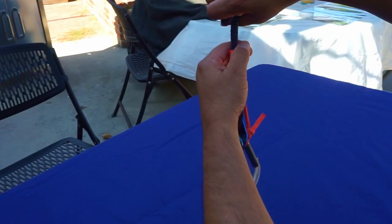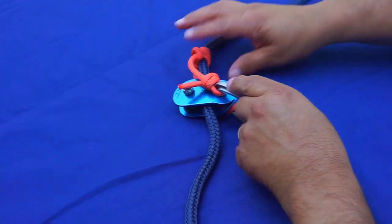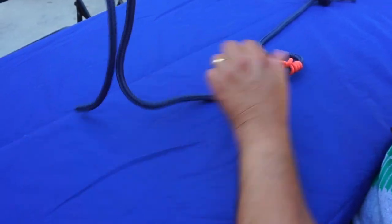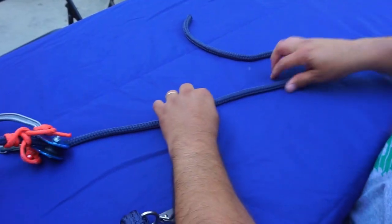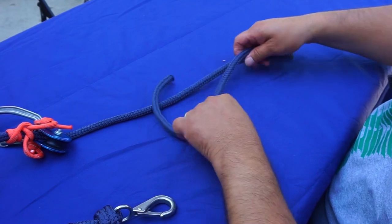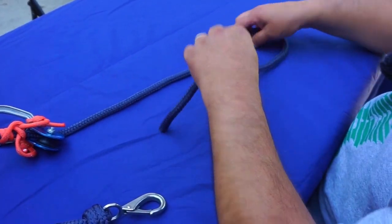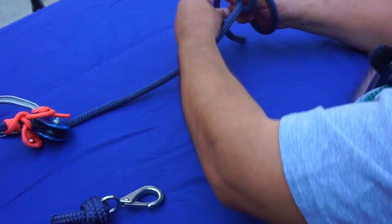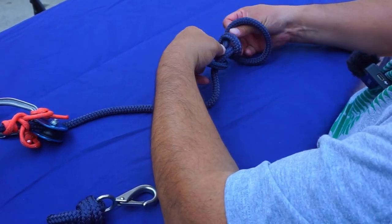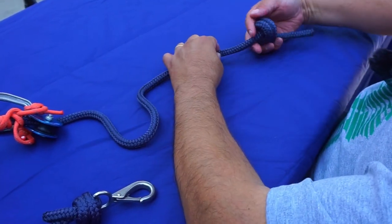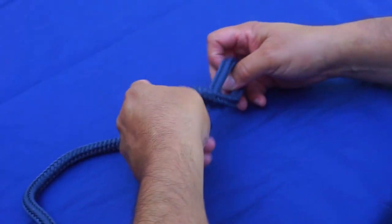This is how you'll move it up and down. Now on the end of this I'm going to put a barrel knot. You'll make a bite, and with the barrel knot you'll go one, two, three wraps and back through itself. Actually that's a double fisherman's, let me go one more.